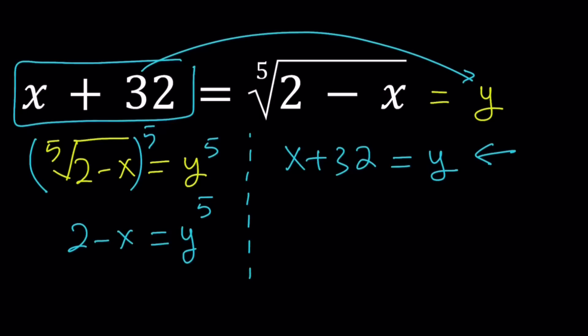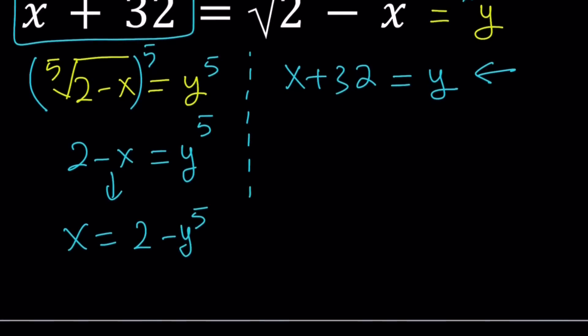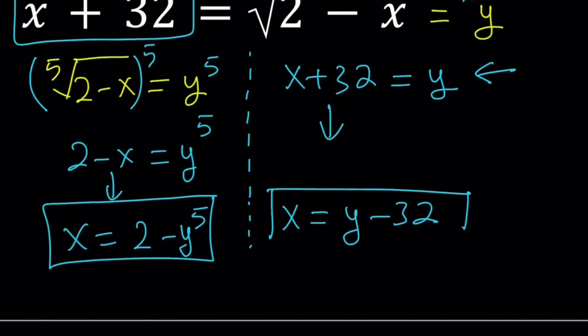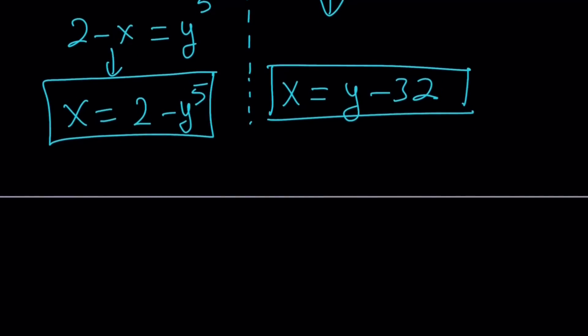From the first equation, x becomes 2 minus y to the fifth power, because if you just switch these around or add x to both sides and then subtract y to the fifth, that's what you get. From here, x becomes y minus 32. Fairly easy, you just subtract 32. Now we have two different values for x. We're going to set them equal to each other and then we're going to solve. And this is not just guess and check. I'll show you how we can get the solution directly.